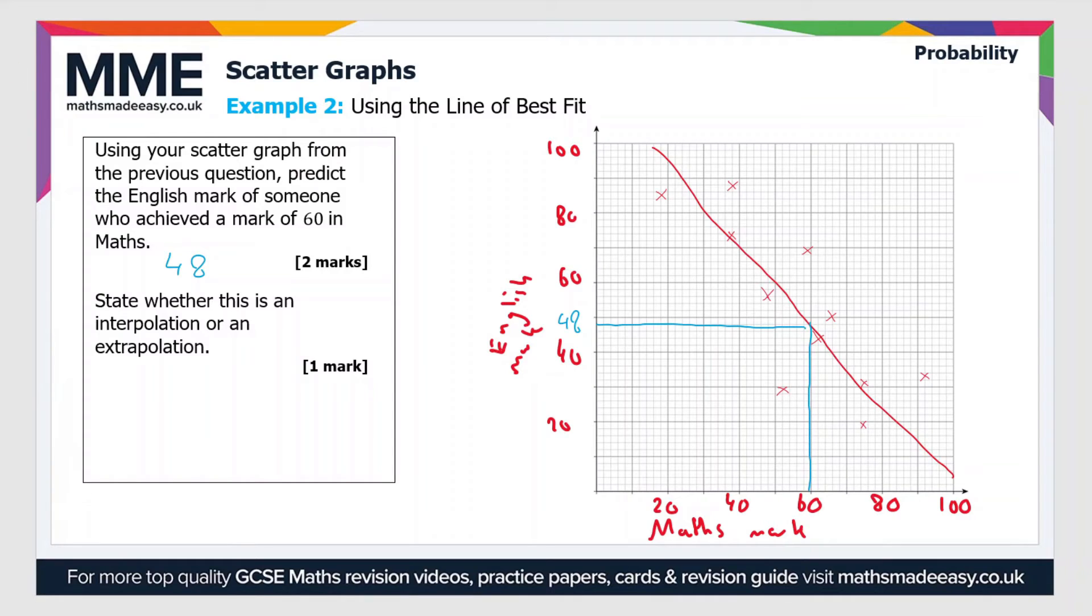The next part of the question says state whether this is an interpolation or an extrapolation. Here we're using our line of best fit to estimate a point which is inside the range of the data given in the question. In this case, this is an interpolation.